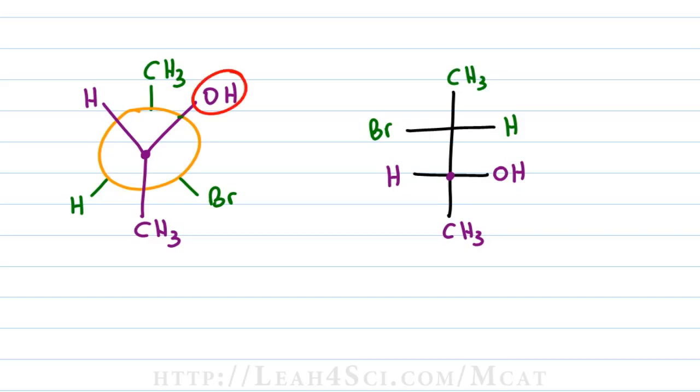How do I know? If they are on the same side when the Newman is staggered, they have to be on opposite sides when we turn it into a Fisher because they have to first undergo that eclipsed rotation.